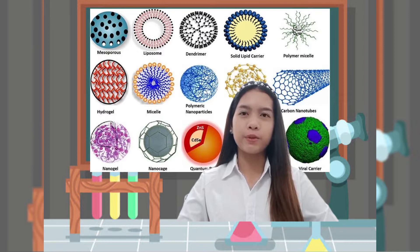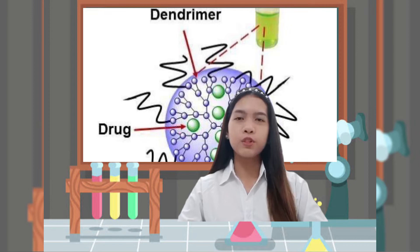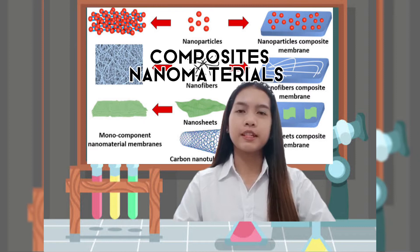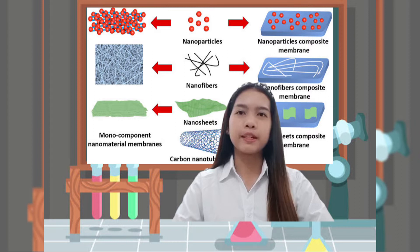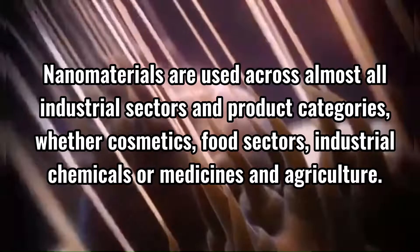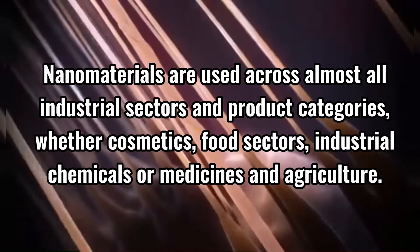The third type is dendrimers, which are made from chemical components and are commonly used for drug delivery. Lastly, composite nanomaterials, which are of scientific and technological importance and include nanoparticles, nanorods, nanofibers, and carbon nanotubes.